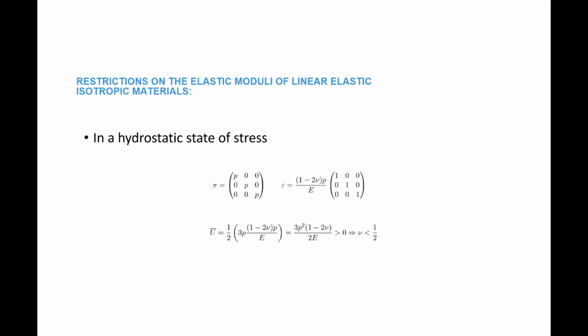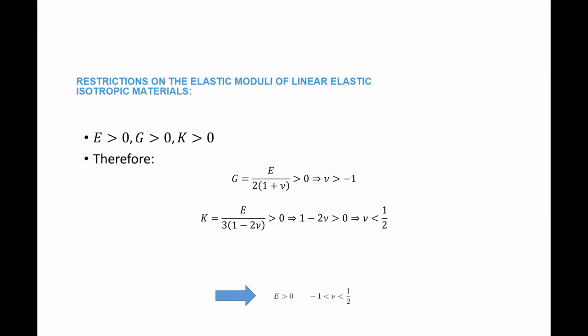So the final restrictions are: Young's modulus has to be greater than zero, and Poisson's ratio has to be between negative one and one half. In other words, Young's modulus, the shear modulus, and the bulk modulus — all three of them — have to be greater than zero, implying that Poisson's ratio must satisfy negative one less than nu less than one half. These are the restrictions on the numerical values that Young's modulus and Poisson's ratio can have for linear elastic isotropic material models.